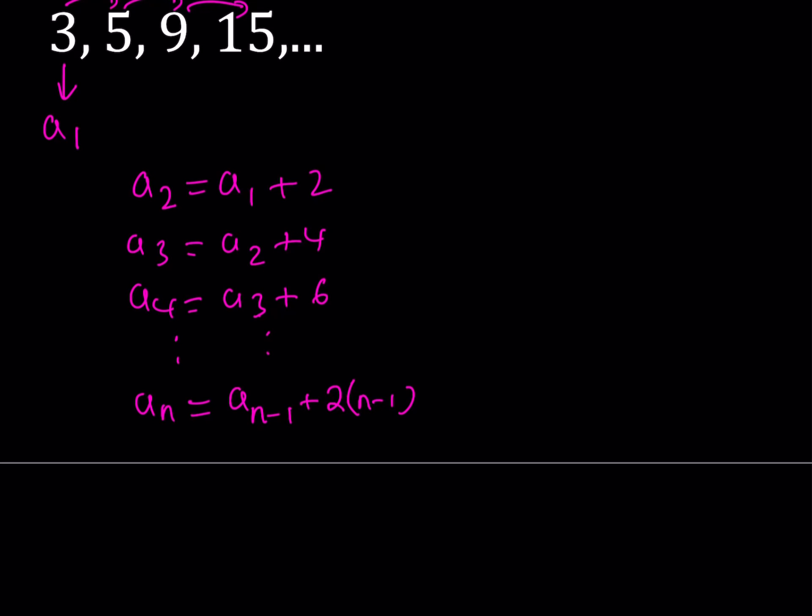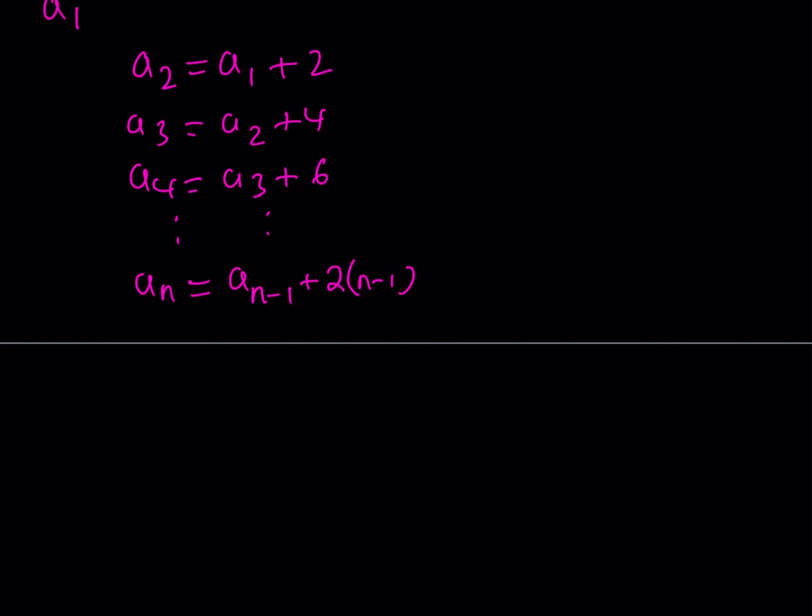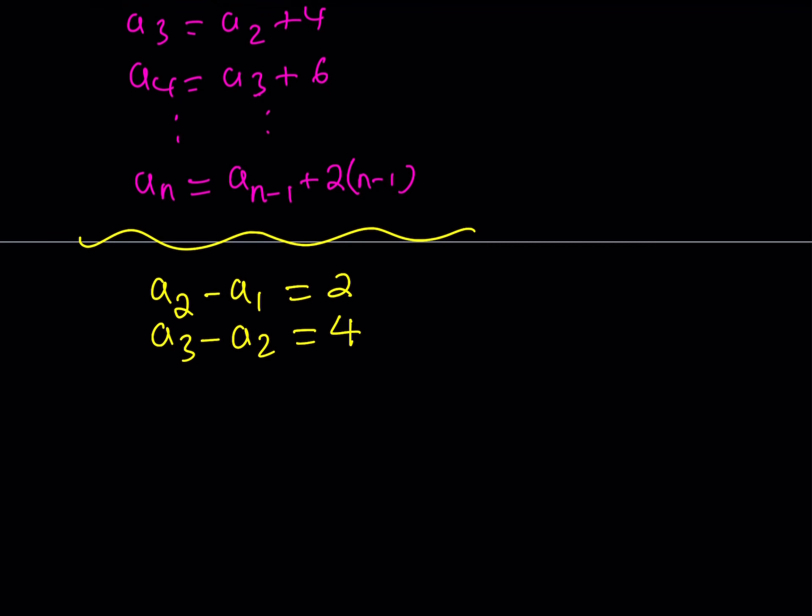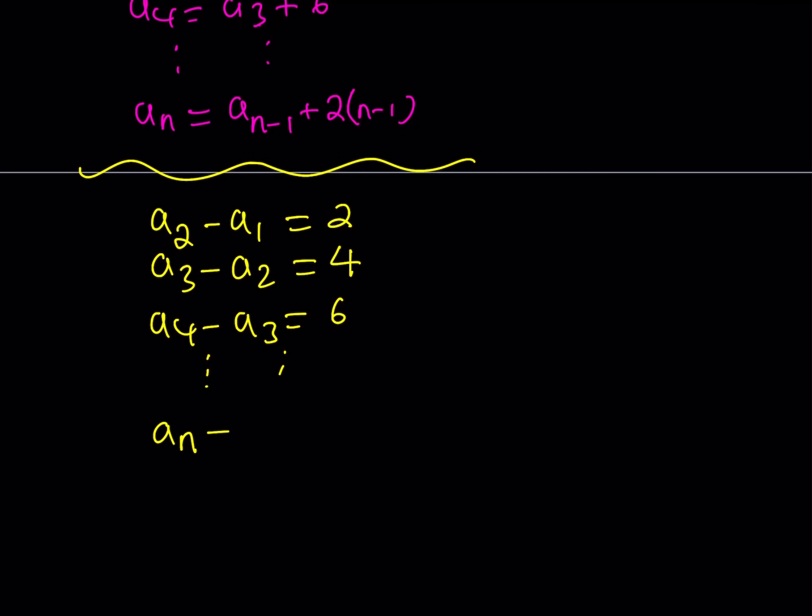So let's go ahead and take this expression and write this in a simpler or maybe better way. So here's what I'm going to do. I'm going to write this as a difference. So let's go ahead and write it as a sub 2 minus a sub 1 equals 2. a sub 3 minus a sub 2 equals 4. And then a sub 4 minus a sub 3 equals 6. And then this will continue. And then the nth term can be written as a sub n minus a sub n minus 1 equals 2 times the quantity n minus 1.